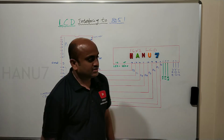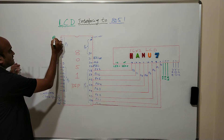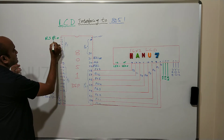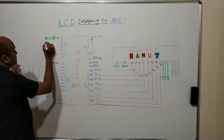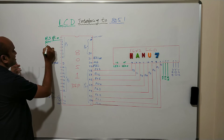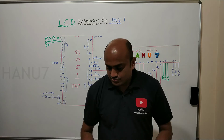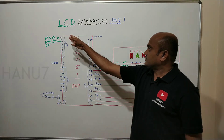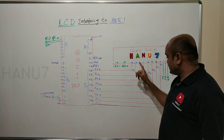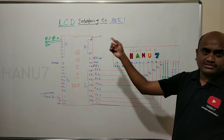So I can take a wire from here: P1.0 connects to RS, P1.1 connects to Read/Write, and P1.2 connects to Enable. Like this we take three wires and connect from microcontroller pins 1, 2, 3 to LCD pins 4, 5, 6. I didn't draw the connection line in the diagram because it spans a long distance.